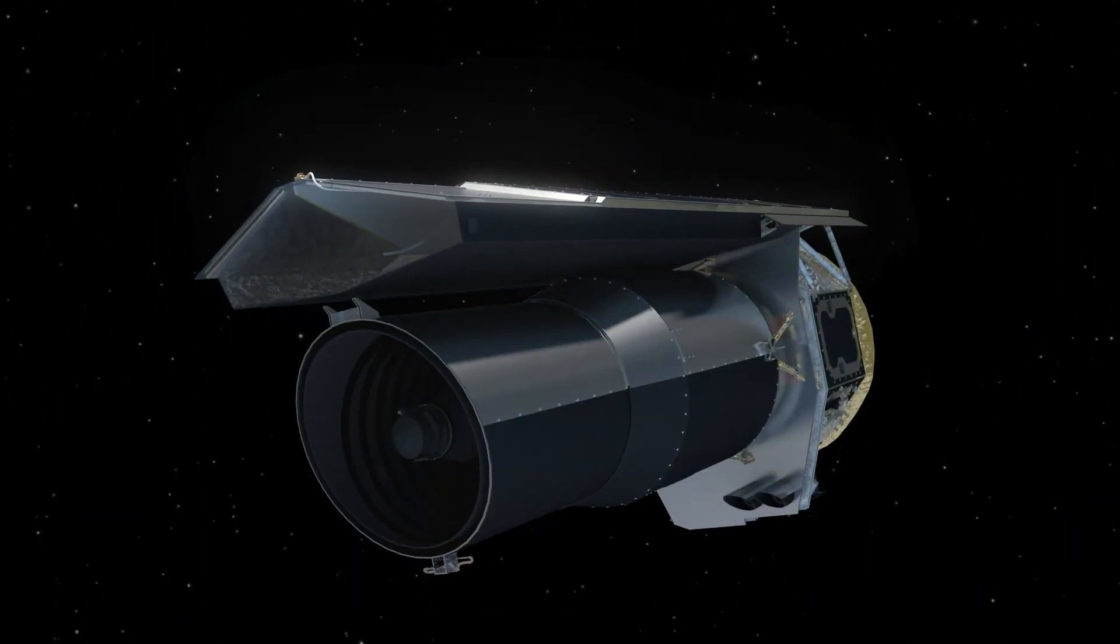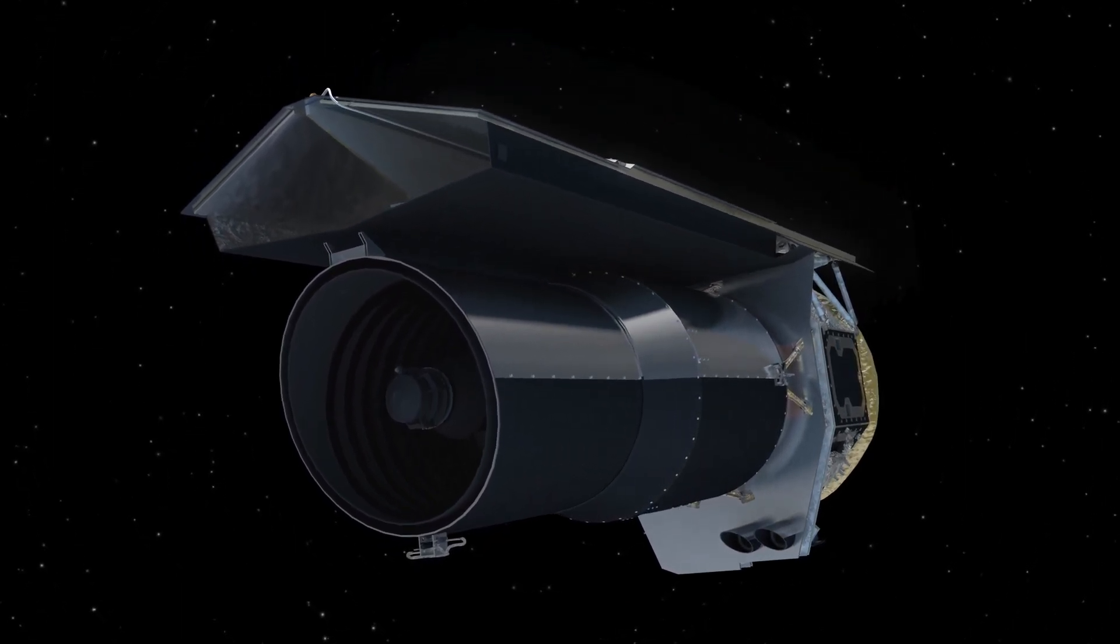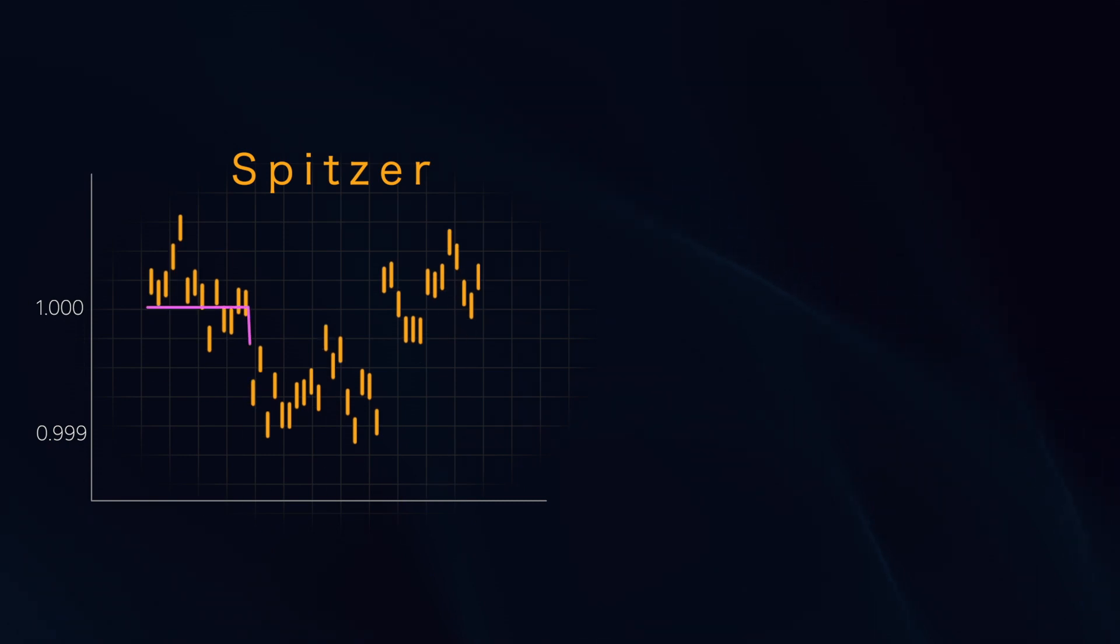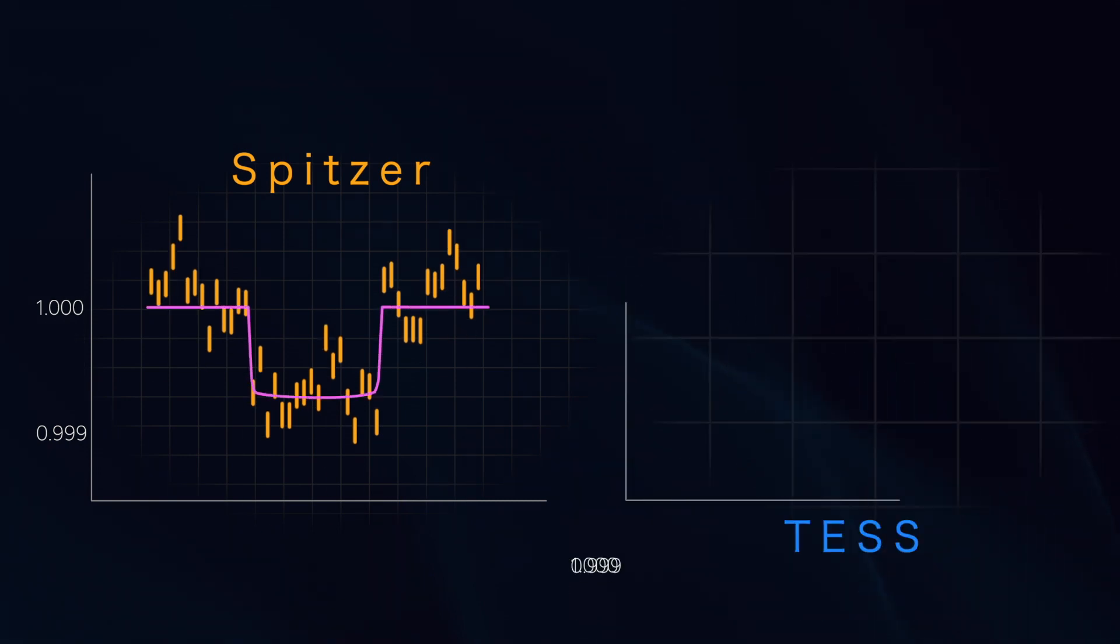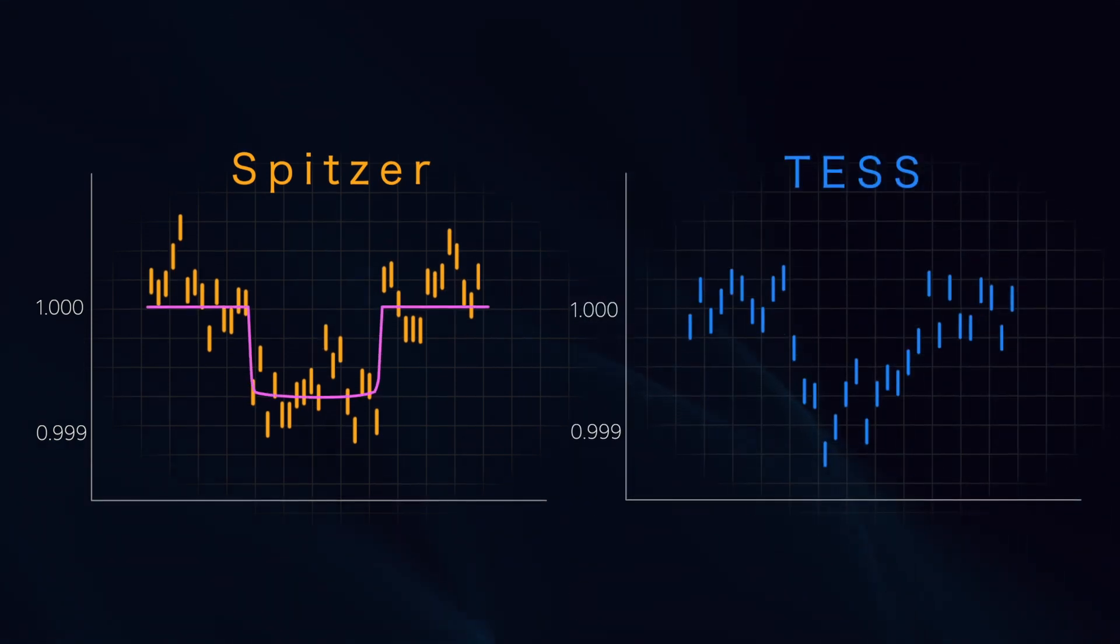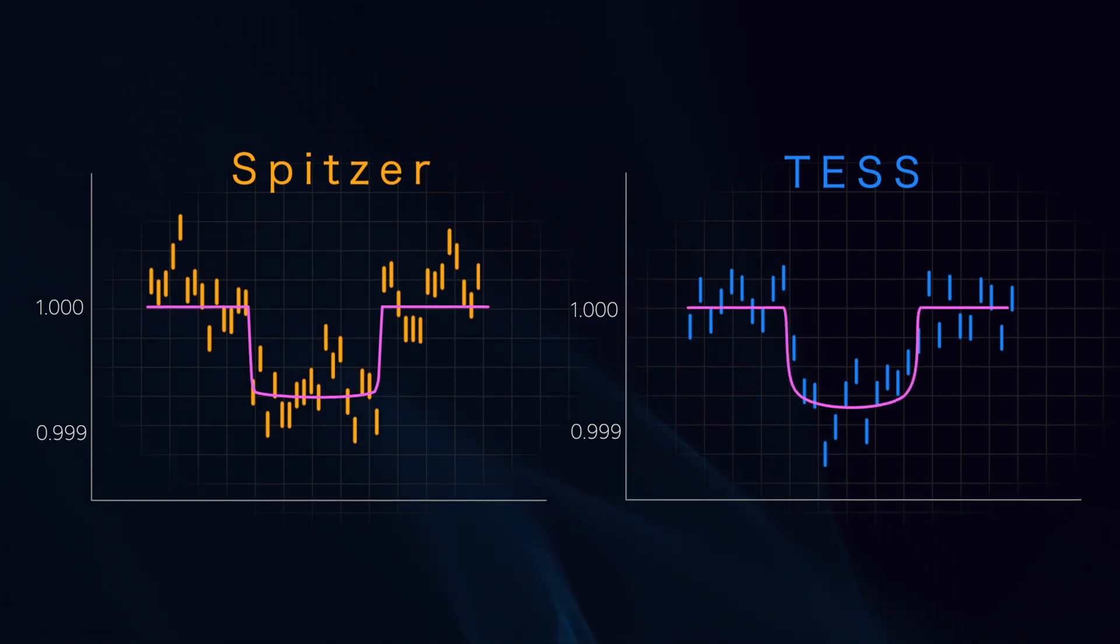Scientists wanted independent confirmation of TOI-700d, so they monitored its star with NASA's Spitzer Space Telescope. Spitzer saw a clear transit from the outer planet, affirming its existence and improving scientists' certainty of the planet's size.